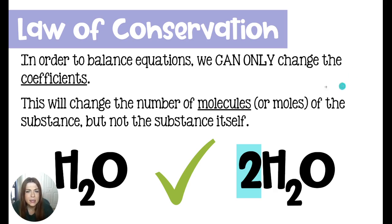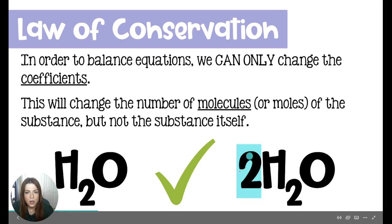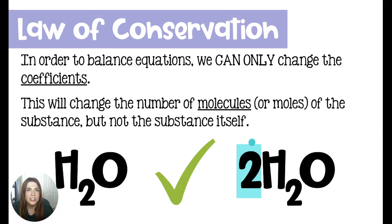So in this case, when we put coefficients in front of our substances in chemical equations, we are changing the amount of the substance — the number of molecules, or later the number of moles — but we're not actually changing the chemical itself, just the amount.